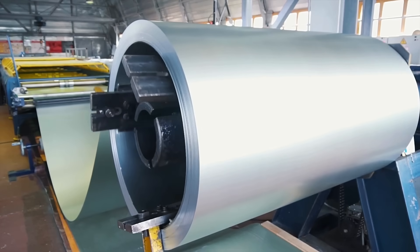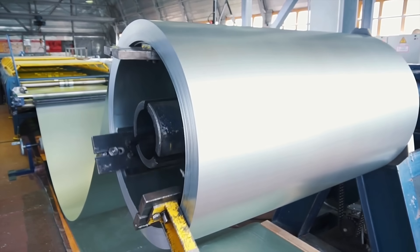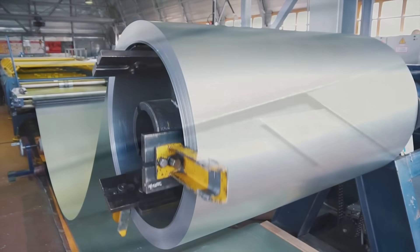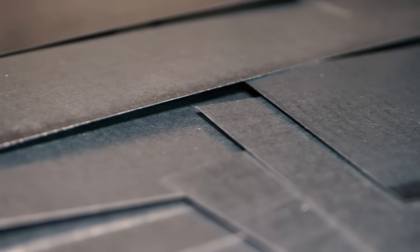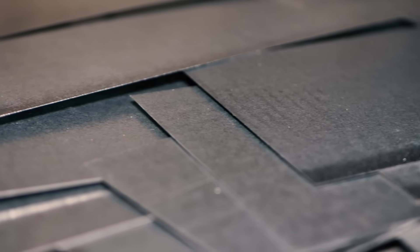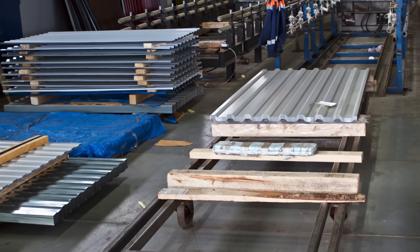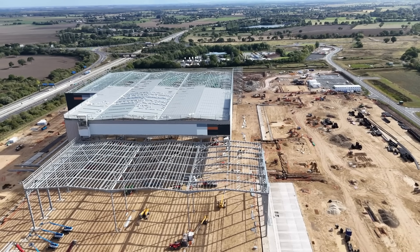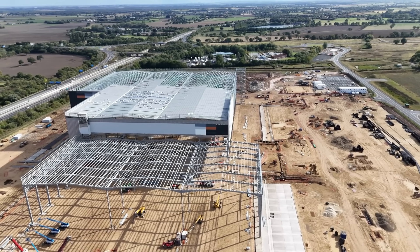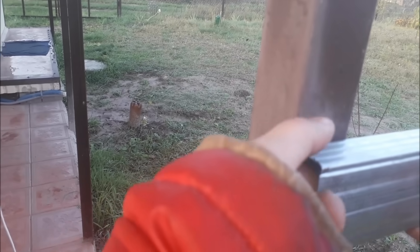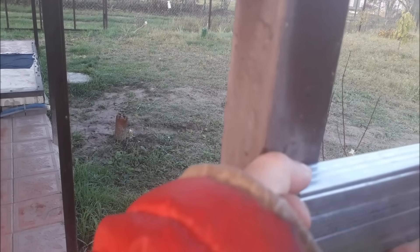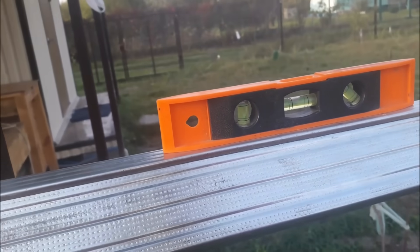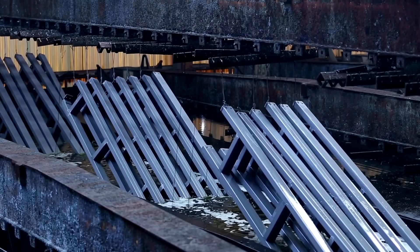When you hear the phrase galvanized metal, you might picture shiny steel fences, rooftop sheets, or hardware parts coated in a silvery finish. But what exactly makes something galvanized, and why is this process so widely used in construction, automotive manufacturing, home improvement, and even everyday objects we rarely notice?